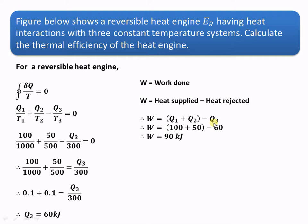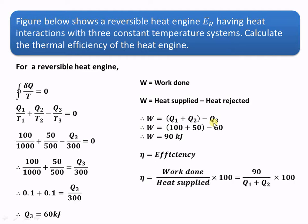The thermal efficiency of a heat engine is given by output divided by input, that is work done divided by heat supplied. In this case work done is 90 kJ and heat supplied from the two sources is Q1 plus Q2. Substituting the corresponding values, we get the efficiency as 60 percent.